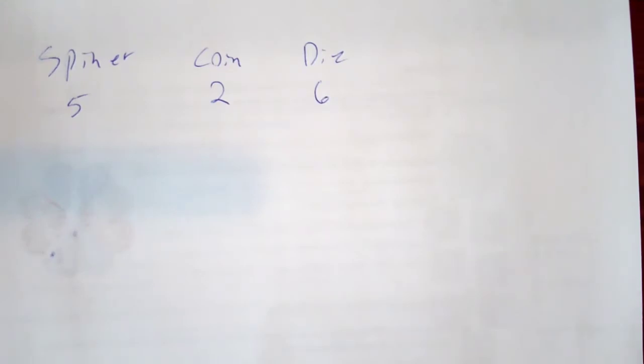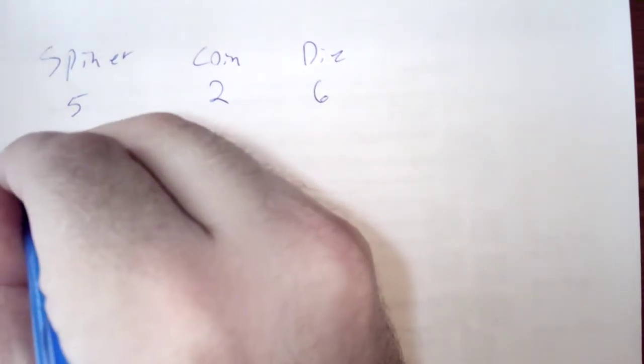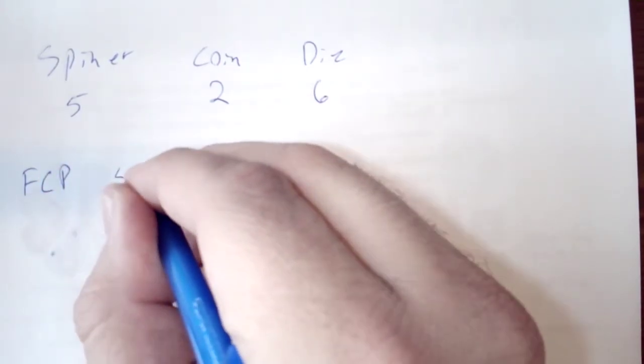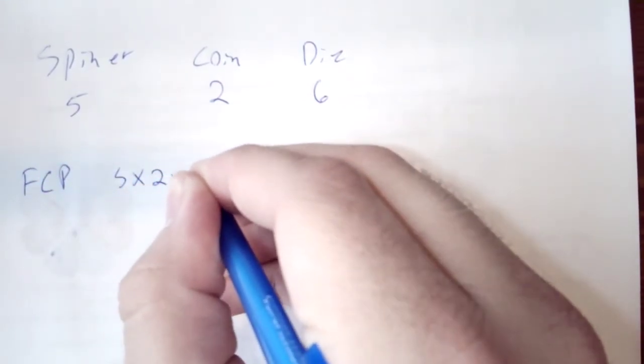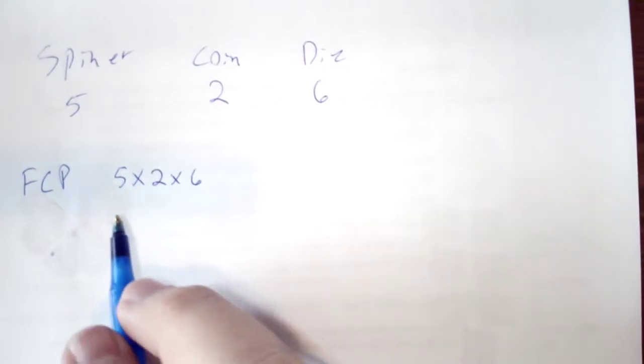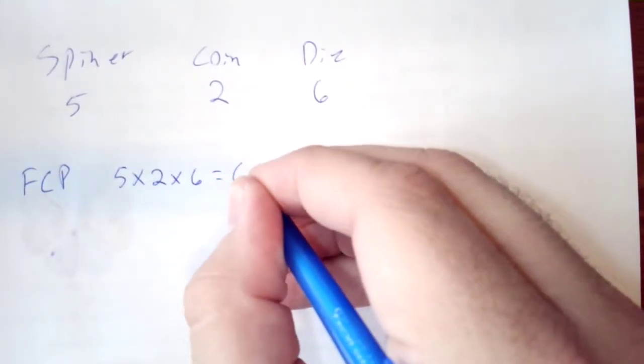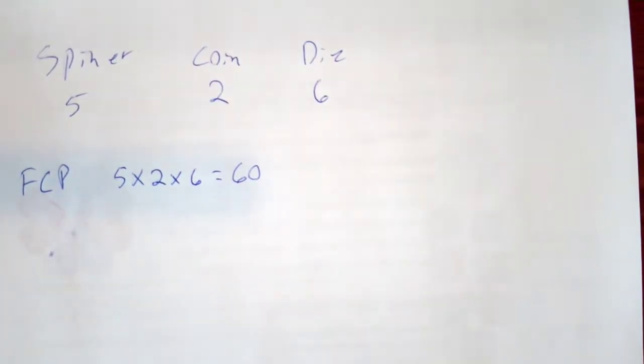We're going to spin the spinner, flip the coin, and roll the die. We want to know how many possible outcomes we have. With our fundamental counting principle, we're going to go 5 times 2 times 6. So 5 times 2 is 10, times 6 gives us 60 possible outcomes with this event.